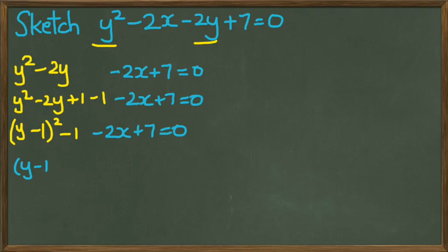If I simplify this, I'm going to get y minus 1 squared equals 2x minus 6, and I can simplify even more, and there is my simplified equation. Now from here, I can see that the turning point of the parabola is going to be at positive 3, 1.